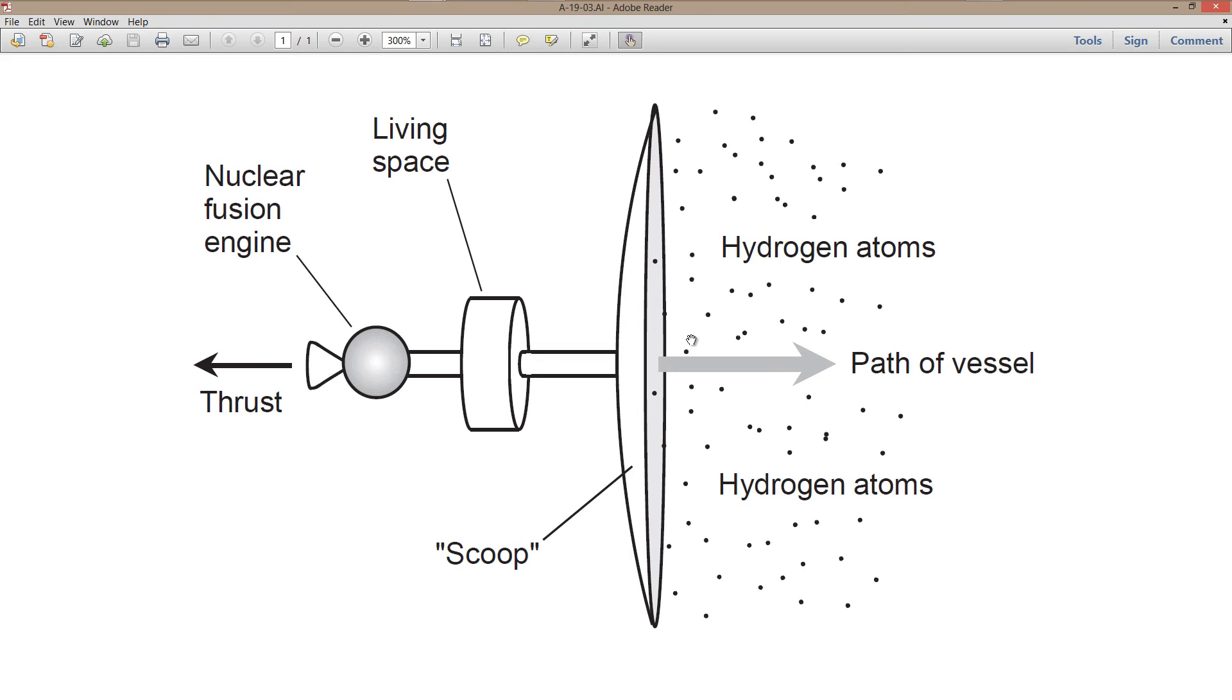But this is known as a Bussard ramjet, presumably after a man named Bussard who first thought it up. And it's called a ramjet because it really does operate by means of sucking this stuff in, very much like a ramjet engine sucks air in and creates thrust out of that.